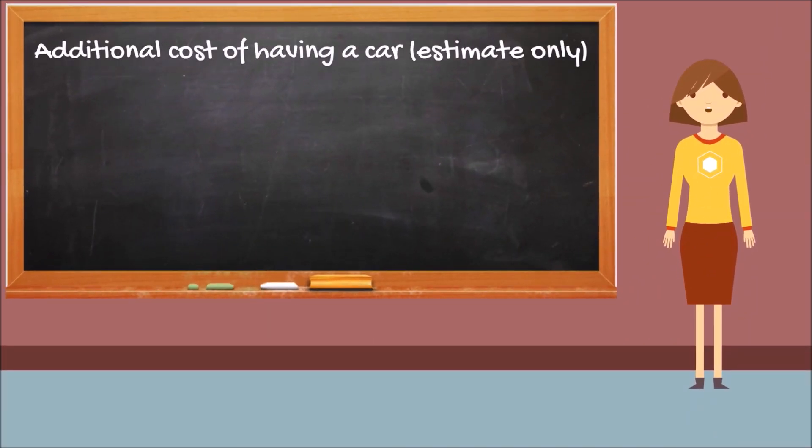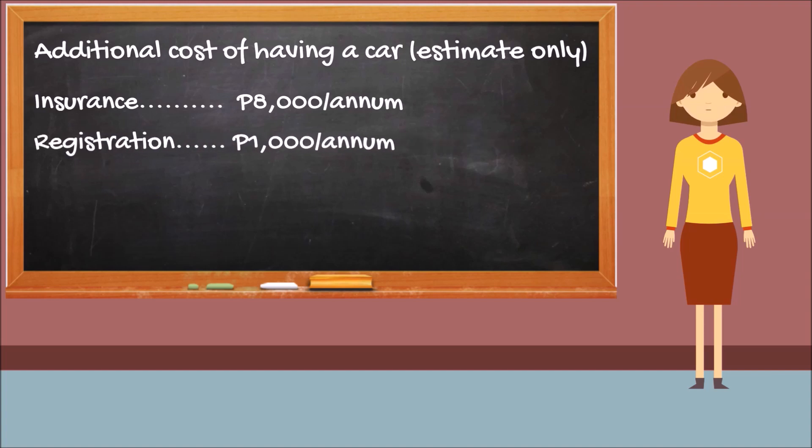Additional costs of having a car include insurance of around $8,000 per annum, registration of around $1,000 per annum, which includes stencil, smoke emission, and LTO fees.